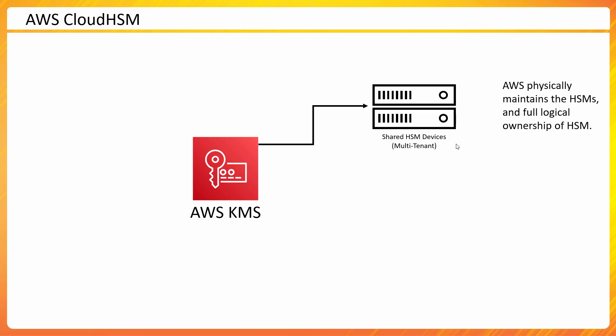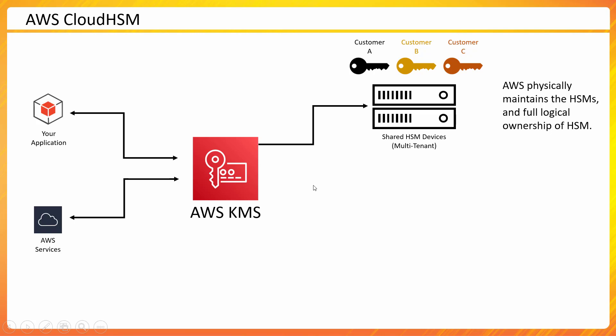These HSM devices are used in a shared way — they are multi-tenant, meaning on one physical device there may be multiple customers' keys stored. AWS handles high availability behind the scenes so one hardware failure doesn't bring down many customers. My application would start accessing these keys which are physically managed in the HSM device, and we pay less cost because it is shared infrastructure.